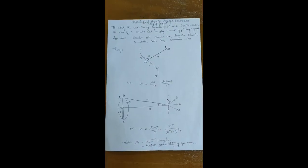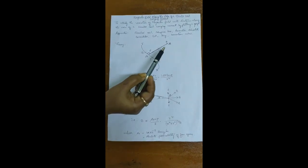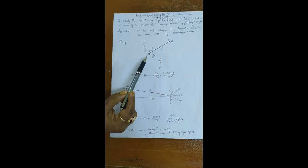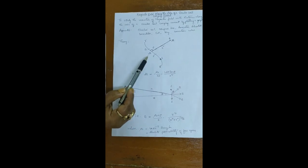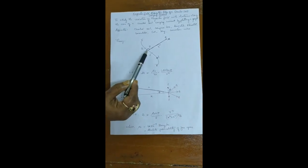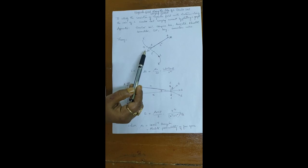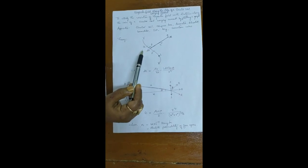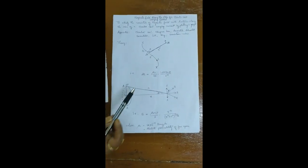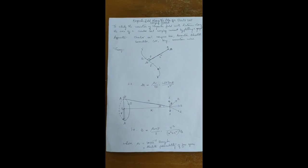We will see the theory related to this experiment. A current-carrying wire generates a magnetic field. According to Biot-Savart's law, the magnetic field dB at a point due to an element of a conductor carrying current is directly proportional to the strength of the current I, the length of the element dL, the sine of the angle theta between the element and the line joining the element to the point, and inversely proportional to the square of the distance R. That is, dB equals mu₀ by 4π into I·dL·sinθ divided by R².